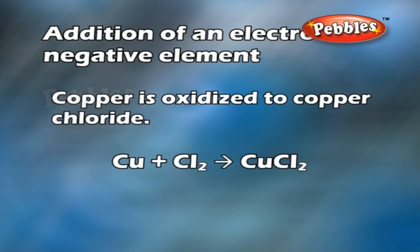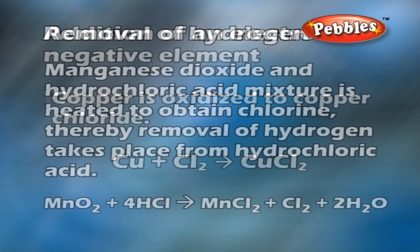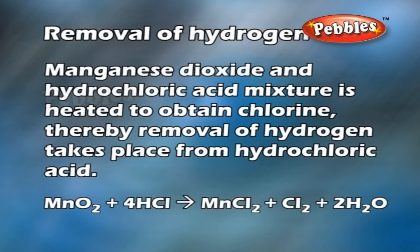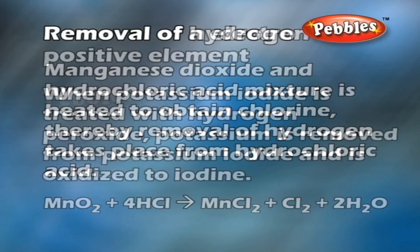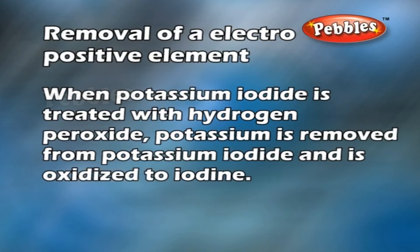Addition of an electronegative element: copper is oxidized to copper chloride — copper plus chlorine gives copper chloride. Removal of hydrogen: manganese dioxide and hydrochloric acid mixture is heated to obtain chlorine, thereby removal of hydrogen takes place from hydrochloric acid.